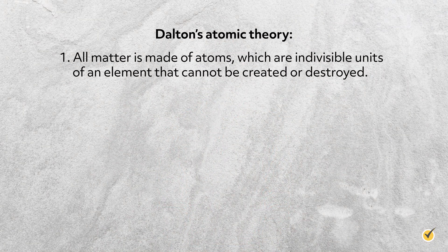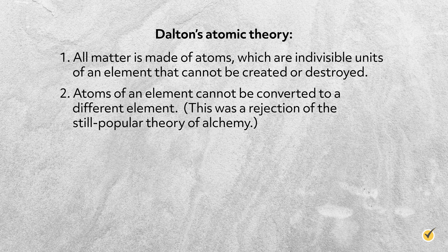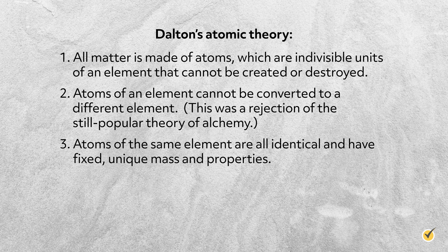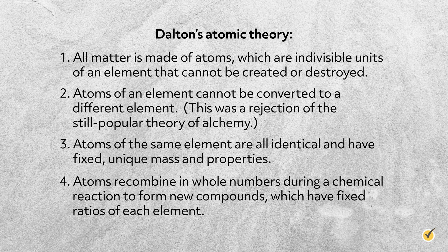All matter is made of atoms, which are indivisible units of an element that cannot be created or destroyed. Atoms of an element cannot be converted to a different element — this was a rejection of the still popular theory of alchemy. Atoms of the same element are all identical and have fixed unique mass and properties. Atoms recombine in whole numbers during a chemical reaction to form new compounds, which have fixed ratios of each element. Dalton envisioned the atom to be similar to a billiard ball, completely solid and indivisible. While this explained why mass was conserved during chemical reactions, he had no way of knowing that subatomic particles existed, which means that Dalton's theories had a few drawbacks and fallacies.